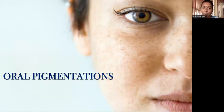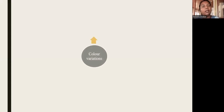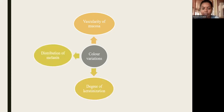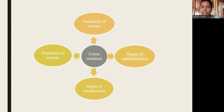Before getting to the etiology and different pigmentations in the oral and perioral structures, we have to understand why there is color variation in oral mucosa and other perioral structures. There are four reasons for color variation: first, vascularity of mucosa; second, distribution of melanin; third, degree of keratinization of each location; and fourth, degree of epithelialization.